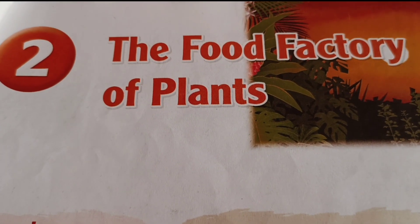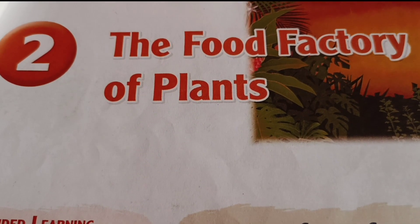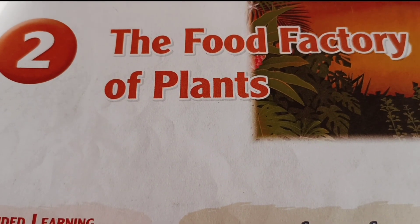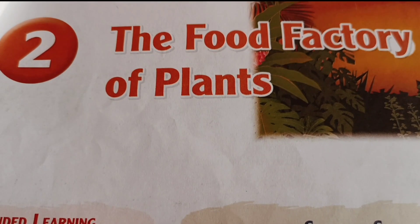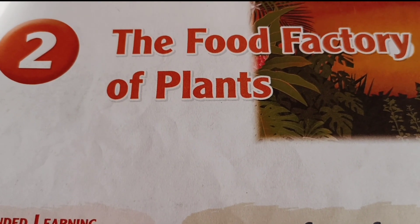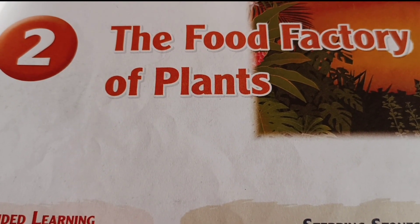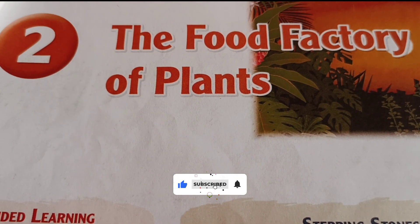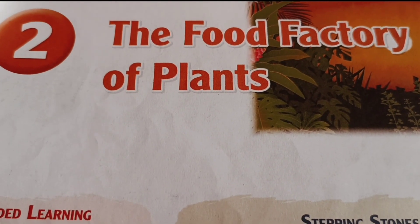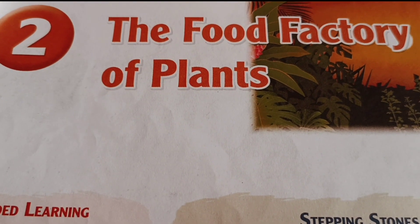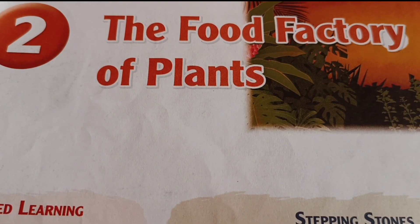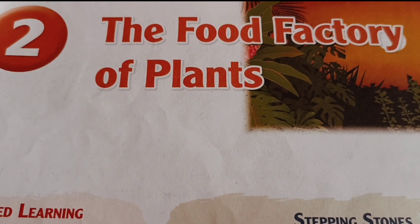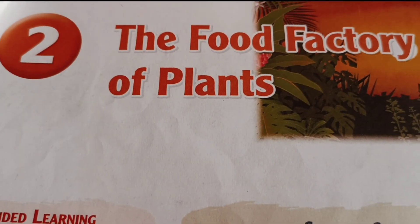Hello students, welcome to West Bengal English Video Guide. Today we are going to solve Chapter 2, 'The Food Factory of Plants' from Class 4 Science book, and also try to find out some inside question answers. Before we start, requesting you to like the video, subscribe the channel, and press the bell icon to get further notifications. If you missed any video, check the description box or playlist. Let's start the chapter.